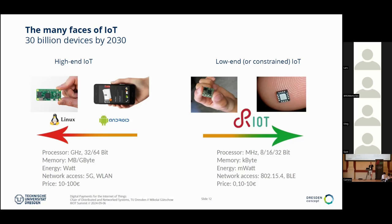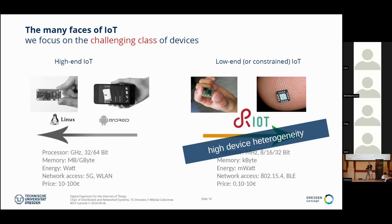IoT has high-end stuff — like bigger computers such as the Raspberry Pi — and then there's the low-end and constrained IoT. We're here at the RIOT Summit and there are a lot of IoT devices that will actually be quite small. Looking at the interesting class — constrained IoT — you have constraints in price, processing power, available memory, available energy, and networking stack. There's also quite high heterogeneity of devices. It's not just Intel and ARM CPUs, but much more out there.